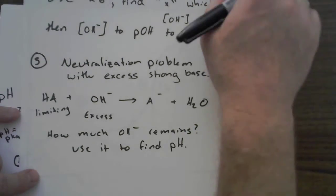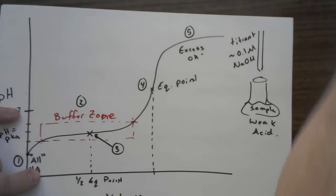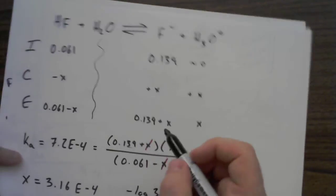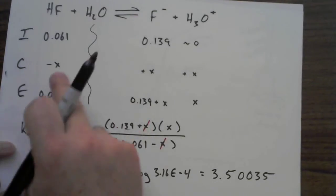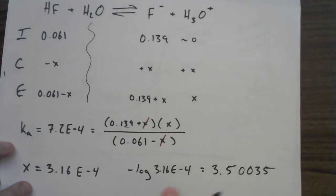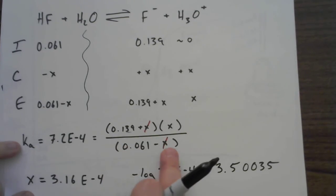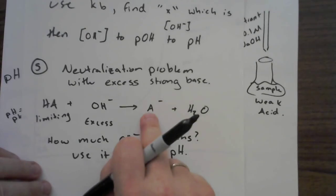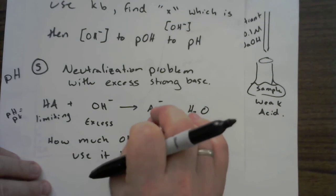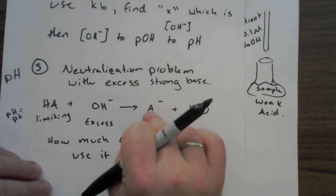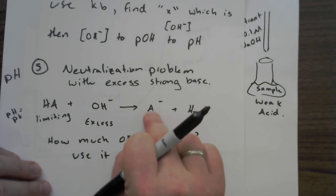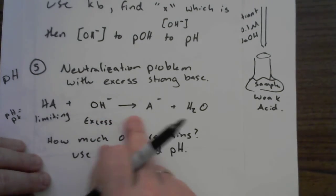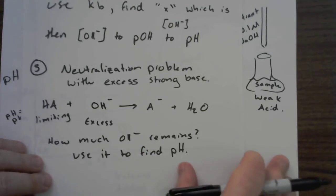And I will tell you that you no longer need to worry about what the weak base is doing. You're going to have one of these situations where the small tiny amount of A minus actually reacting with the water and participating in the acid and base, this is absolutely going to get dwarfed by what this is doing. So these are very simple problems out in zone five. They're just neutralization, limiting reactant problems.